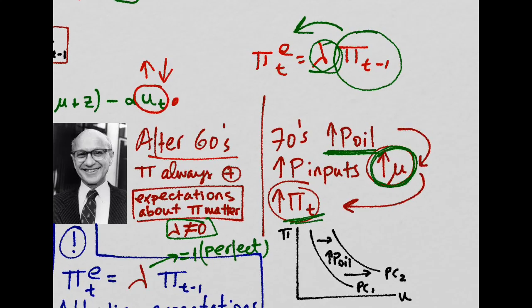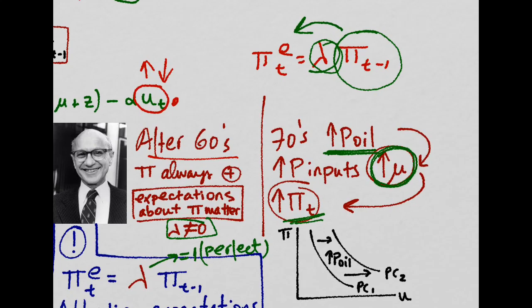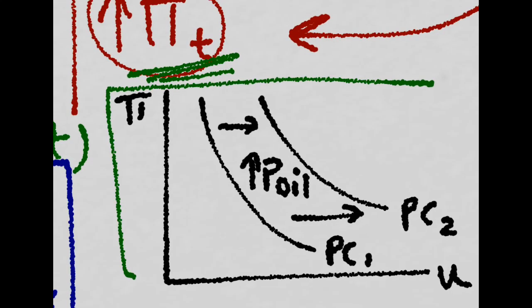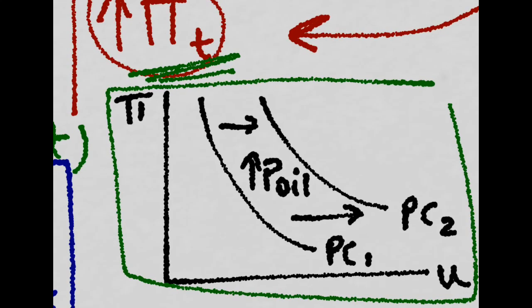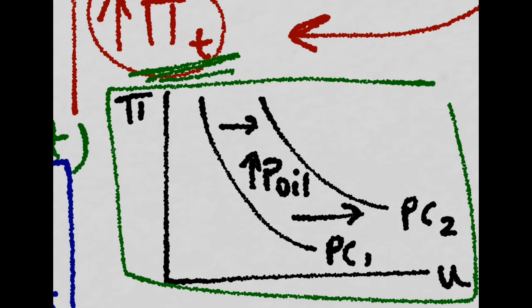So, in the middle of a crisis with high unemployment, prices went up. This is actually a shift in the Phillips Curve, which worsens the trade-off between unemployment and inflation.